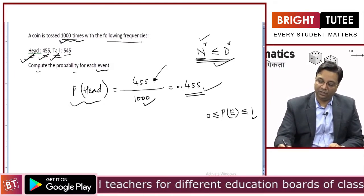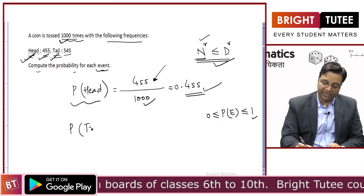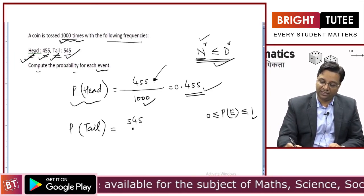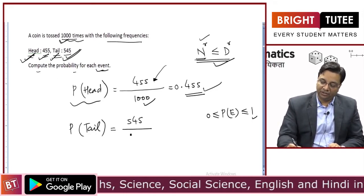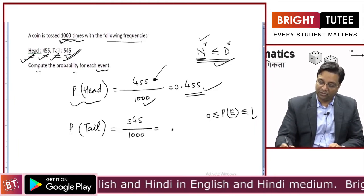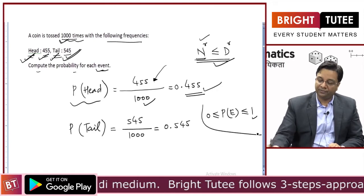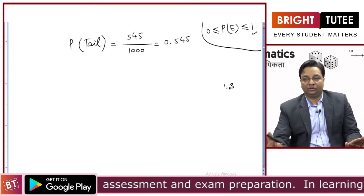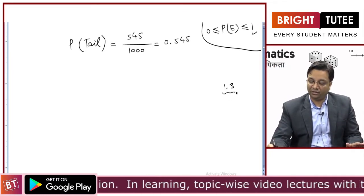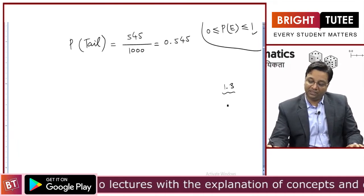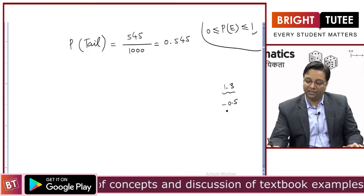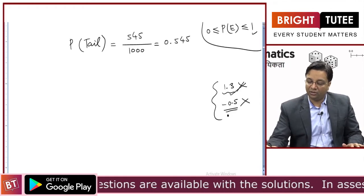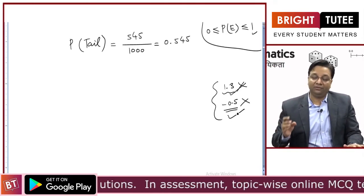The probability of an event can be minimum 0 and maximum 1; otherwise it will be between 0 and 1. In this case, probability of head is 0.455 and probability of tail is 545/1000 = 0.545. If somebody says probability is 1.3, that is wrong. Probability can never be greater than 1, and negative probability like −0.5 is also not possible. Probability will always be between 0 and 1.